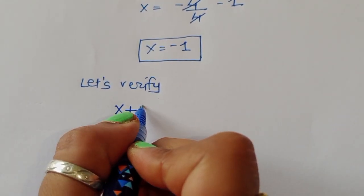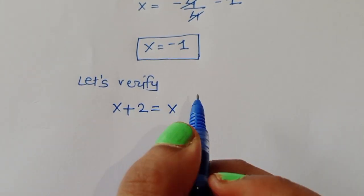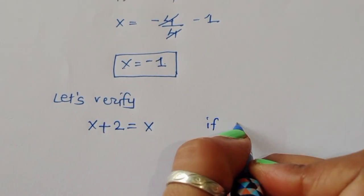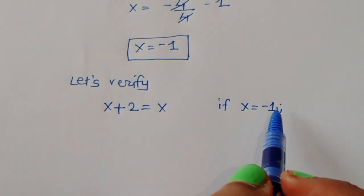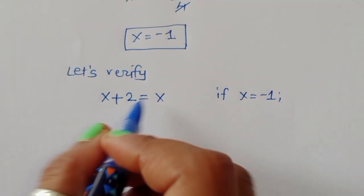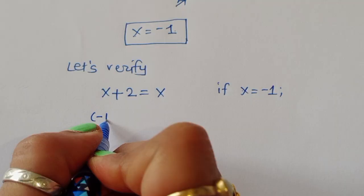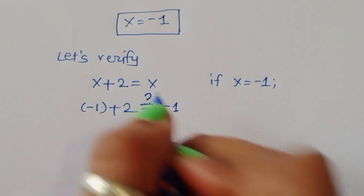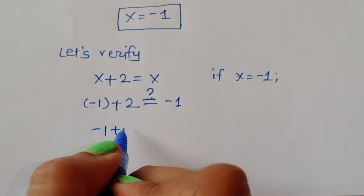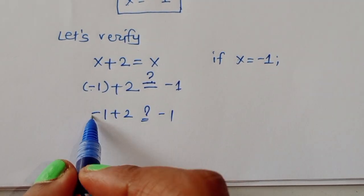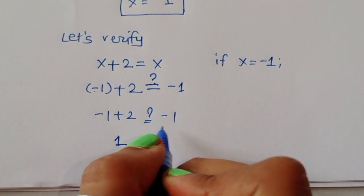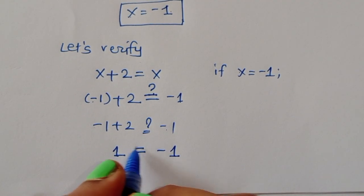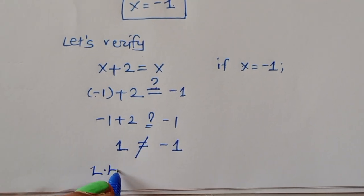Let's verify whether this is correct or not. The equation is √(x + 2) = x. Substituting x = minus 1: we get √(minus 1 + 2) = minus 1, which is √1 = minus 1, giving us 1 = minus 1. So 1 is not equal to minus 1, meaning LHS is not equal to RHS.